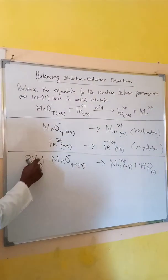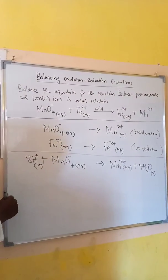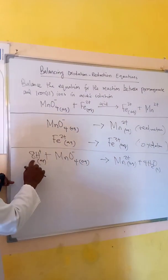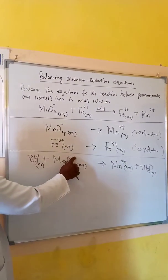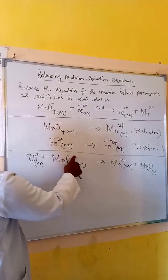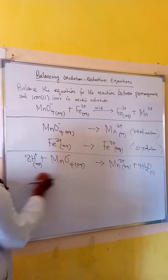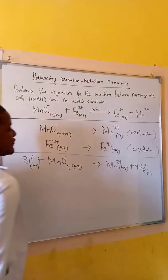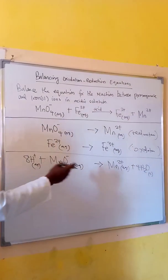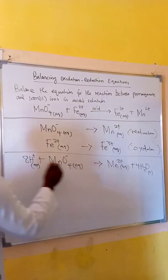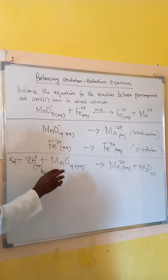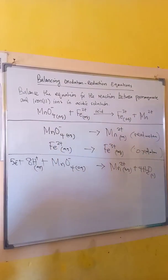We now need to balance the charge using electrons. On the left side we have positive eight minus one, which is positive seven. On the right side we have positive two. To equalize the charges, we add five electrons to the left side, and now the charge is balanced.